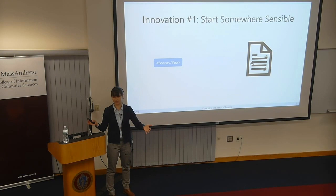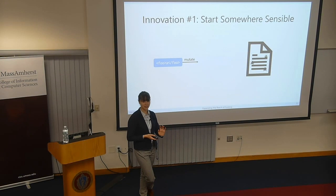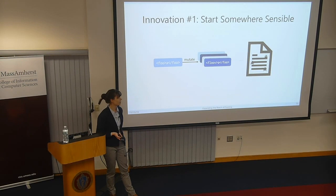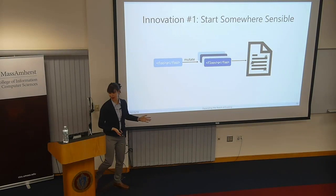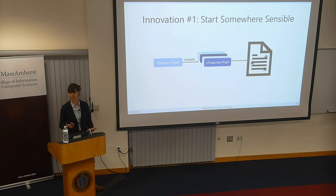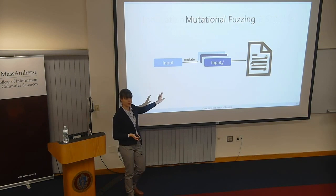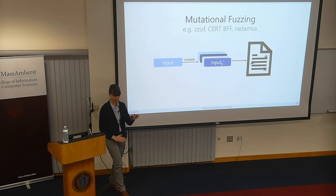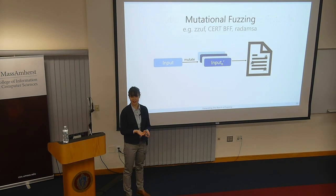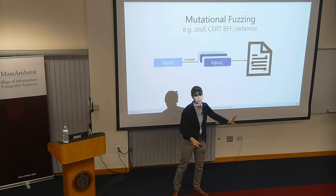Then we perform a bunch of random mutations on these sensible inputs — things like randomly flipping bytes or copying stuff from one place to another. The inputs might not be perfectly structured, but they're a lot closer to what the program expects. This is what we call mutational fuzzing — not totally random, kind of random, giving you weird stuff. This was popularized in tools around the mid-2000s to early 2010s and was highly effective at finding bugs.